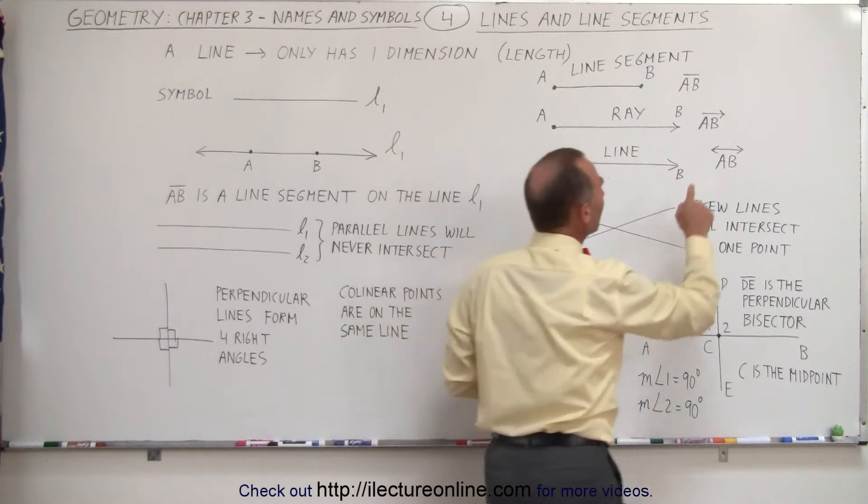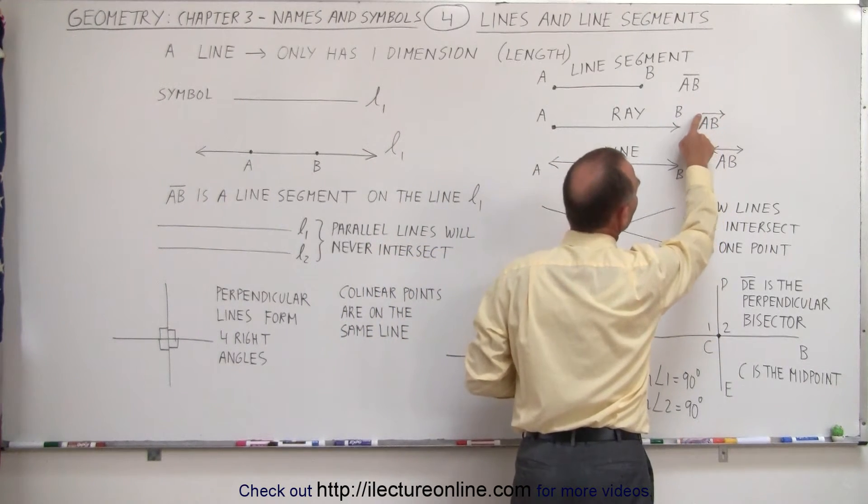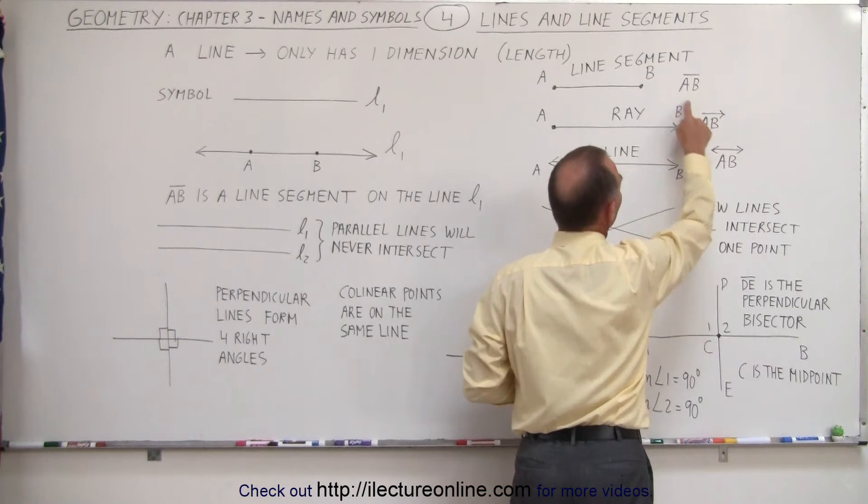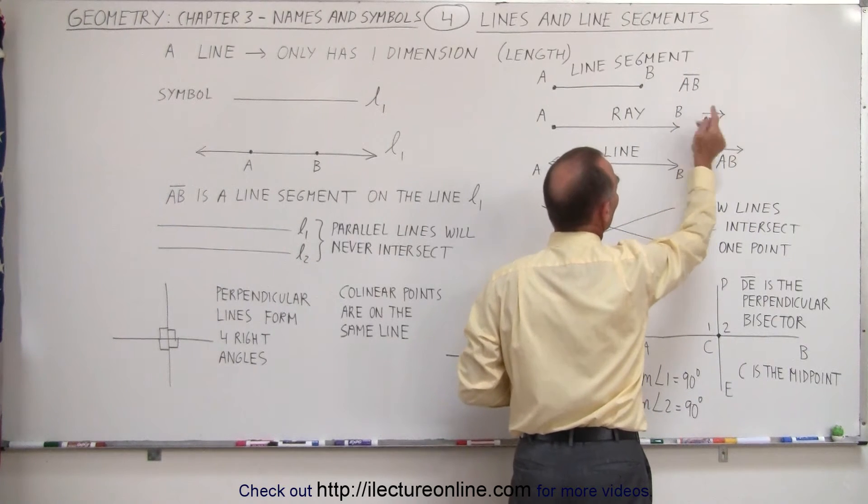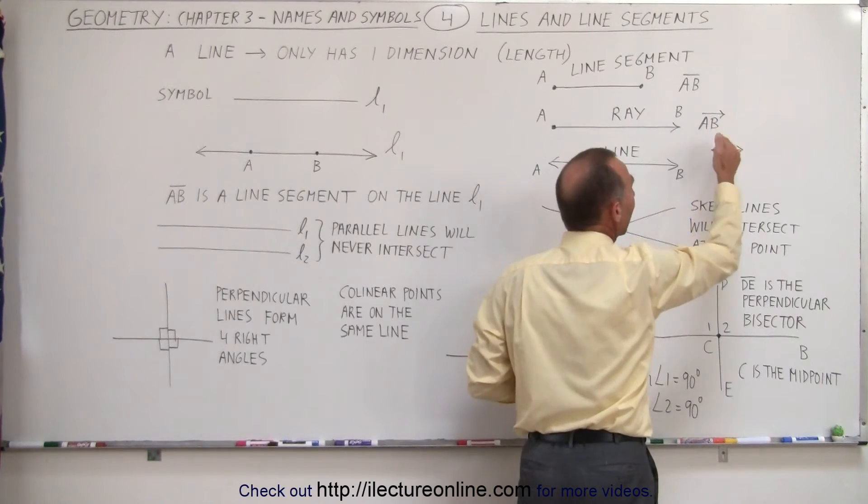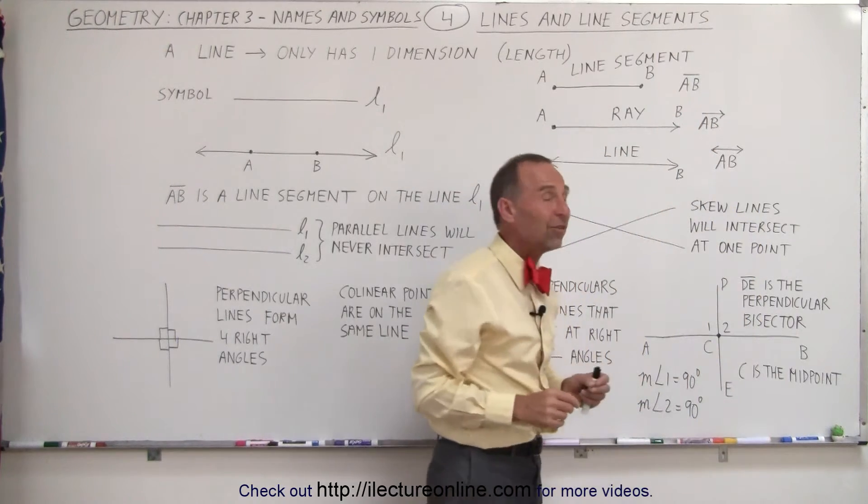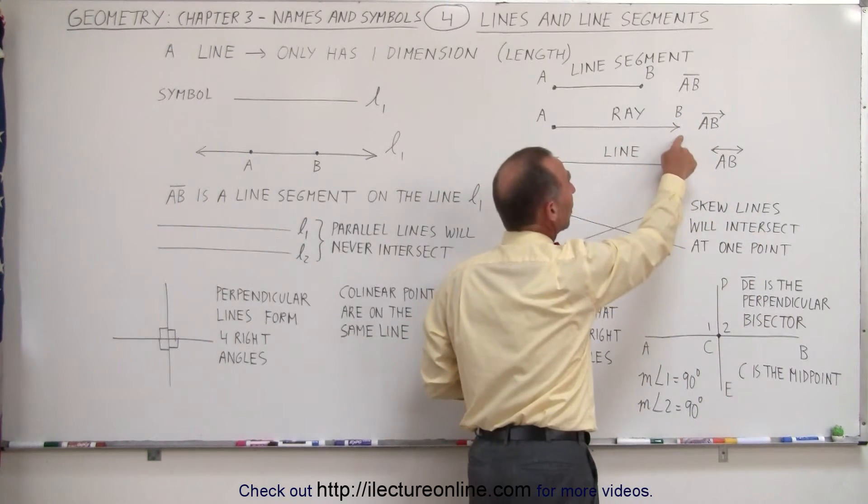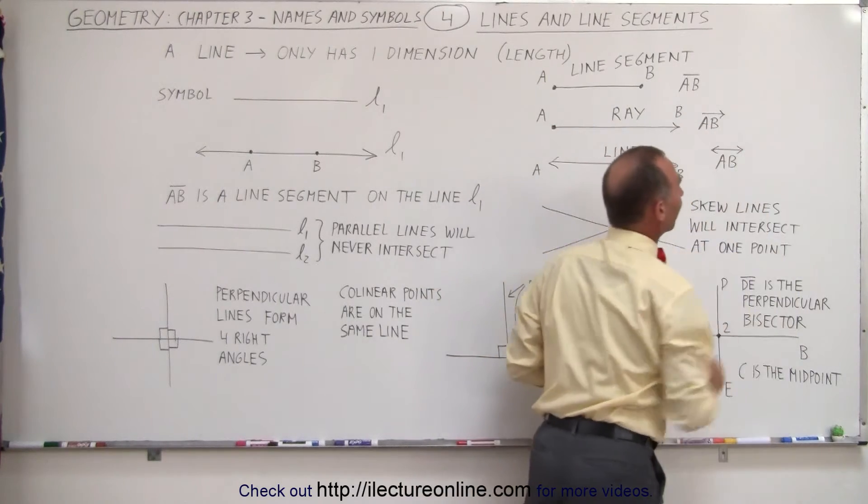So we write the symbol AB with an arrow on top. On the left, we don't have an arrow symbol, just like we have for line segment. That means that's where it starts. But on B, we have a little arrow there, which means just because we put the letter B there, we don't mean that it ends there. It just keeps going forever.